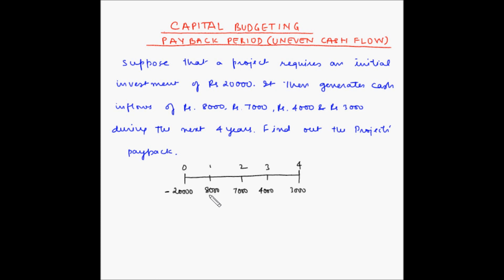Now, as you can see, the cash inflow is uneven. At the end of first year, we are getting 8,000 rupees. At the end of second year, we are getting 7,000 rupees, then 4,000 and then 3,000. An example of even or constant cash flow would be 8,000, 8,000, 8,000, 8,000 or 7,000, 7,000, 7,000, 7,000 and so on.